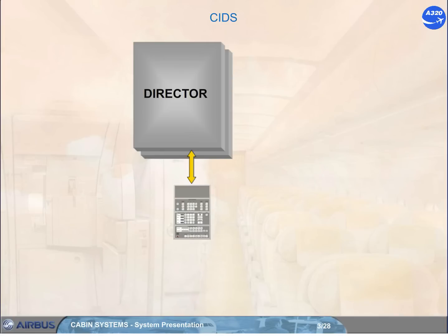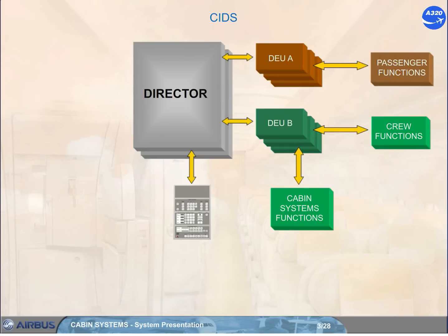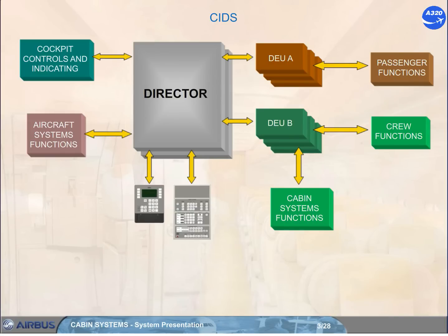It is linked to the Forward Attendant Panel, FAP, for control and monitoring of the cabin functions. The director communicates through decoder-encoder units, DEUs, with the cabin, passengers, and crew systems. The Programming and Test Panel, PTP, is used to program and test the CIDS.